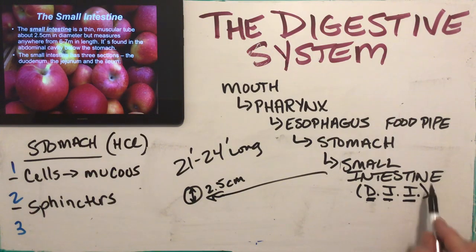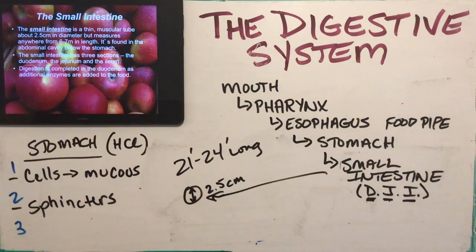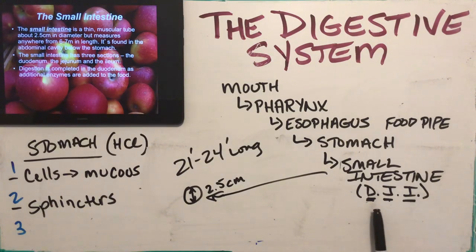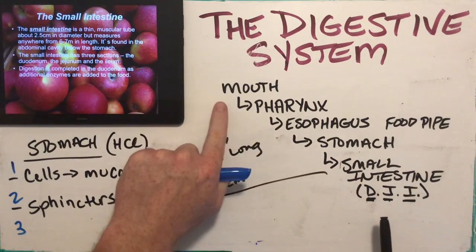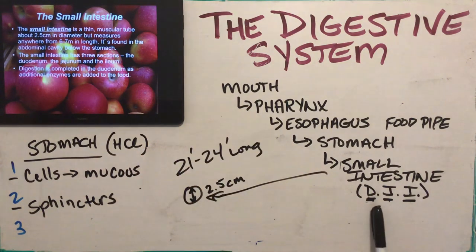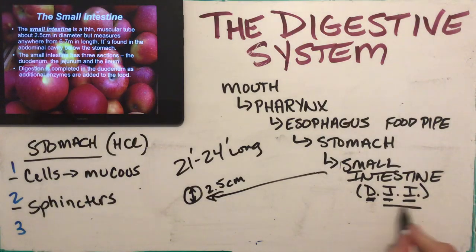By the time we get partway through the duodenum, we add extra enzymes, more chemical digestion occurs, and digestion is completed by the end of the duodenum. Then in the last two sections — the jejunum and ileum — we run absorption, the third step. So we've ingested, we've digested through the stomach and beginning of the small intestine, and now we absorb nutrients in the jejunum and ileum.